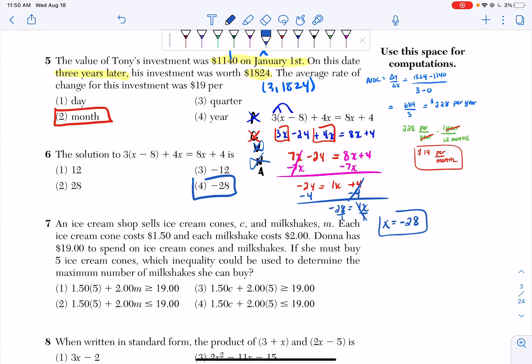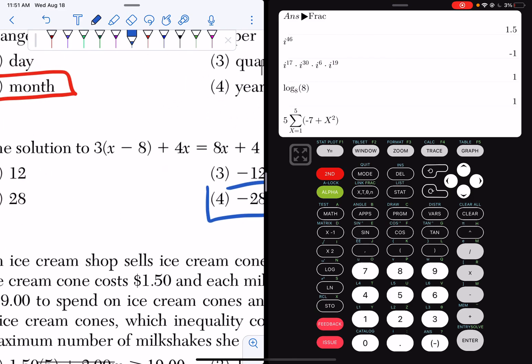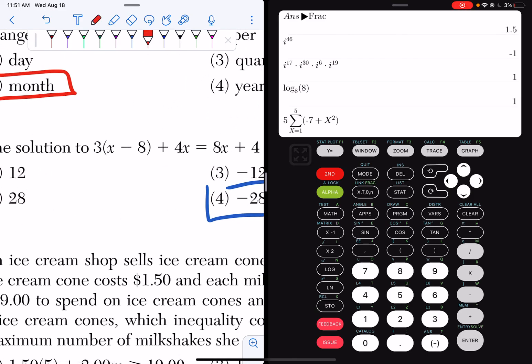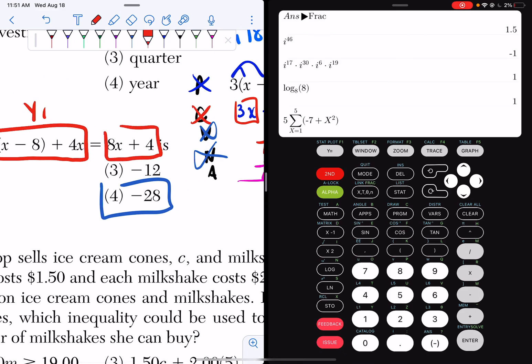What you could have done was this. You could have put this equation right here, or this expression in y1, and then this expression in y2.